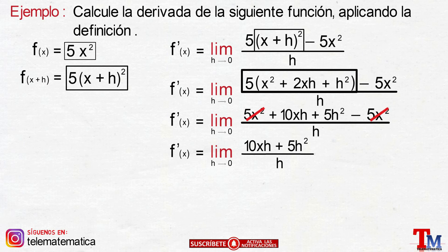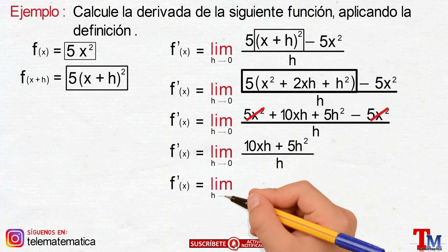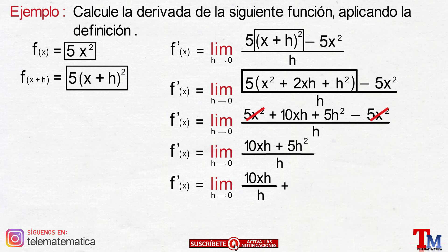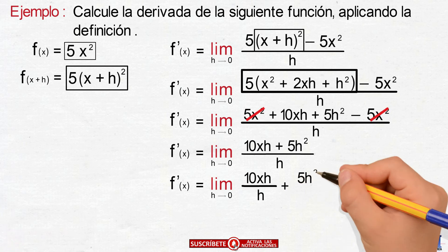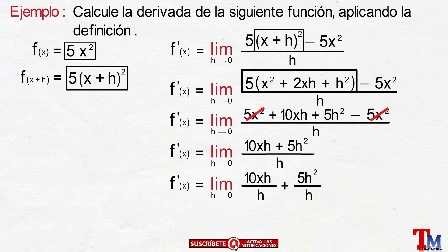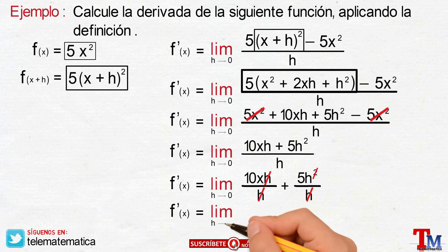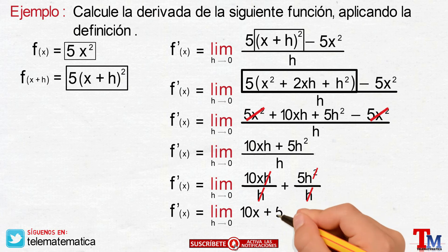Then, distributing the denominator for both terms of the numerator, we would have that the derivative of the function is going to be equal to the limit when h tends to 0, of 10xh divided by h, plus 5h squared divided by h. Simplifying the h in each term, we would have that the derivative of the function is going to be equal to the limit when h tends to 0, of 10x plus 5h.